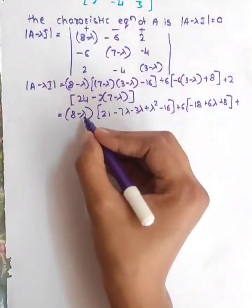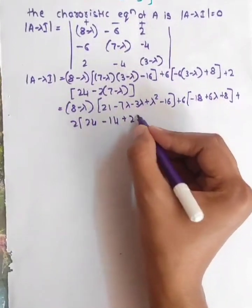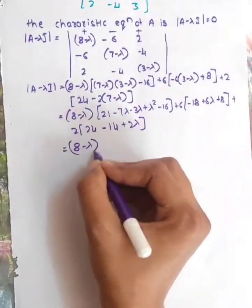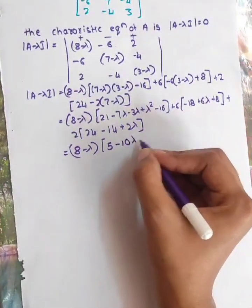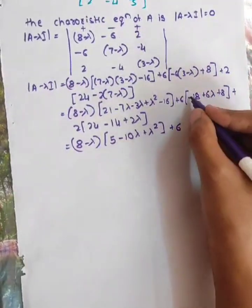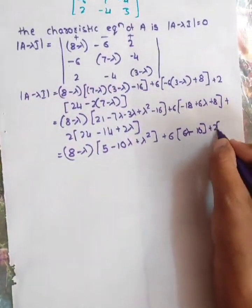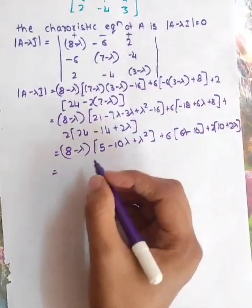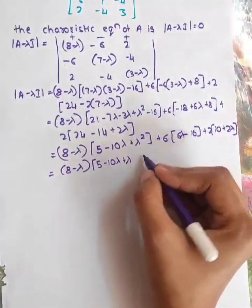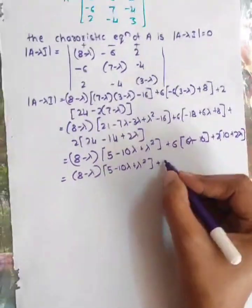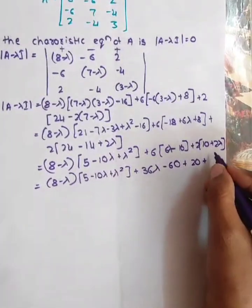Then plus 2 of (24 minus 2 times 7), which gives 14, minus of minus plus 2 lambda. We get 8 minus lambda times (21 minus 16 minus 10 lambda plus lambda squared), plus 6 of (6 minus 6 lambda minus 10), plus 2 of (10 plus 2 lambda).